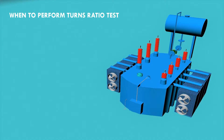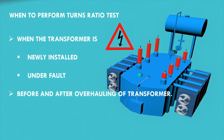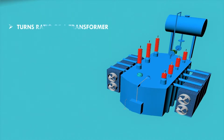The TTR test is performed on a transformer when it is newly installed or under fault. It is also performed before and after overhauling of the transformer to ensure that the connection between the tap changer and the windings are intact. It is important to note that TTR is the ratio of phase voltages on the HV and LV sides, not the line voltages.